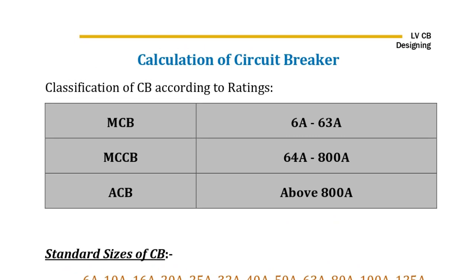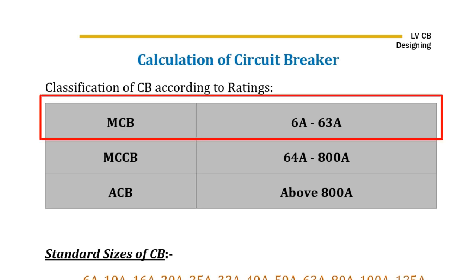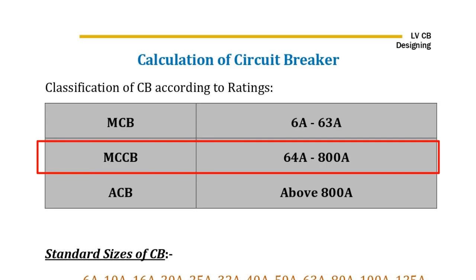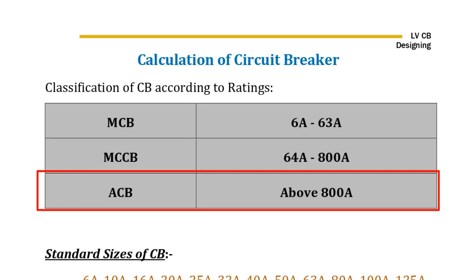Here is the classification of circuit breakers based upon current ratings. The current rating from 6 amperes to 63 amperes is for the MCB — Miniature Circuit Breaker. If the circuit breaker rating is from 64 amperes to 800 amperes, then the circuit breaker will be MCCB — Molded Case Circuit Breaker. If you have to use current more than 800 amperes and it is also a low voltage system, that is you are using this circuit breaker on the secondary side of the distribution transformer.